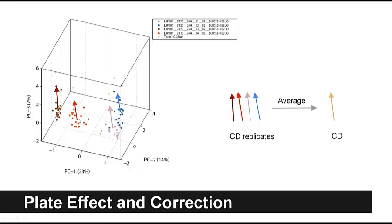So we correct this plate effect. We calculate the same number of directions as the number of replicates — we call these characteristic direction replicates, or CD replicates. For this experiment with four replicates, it has four CD replicates. We then average all these CD replicates to get the direction for this experiment.